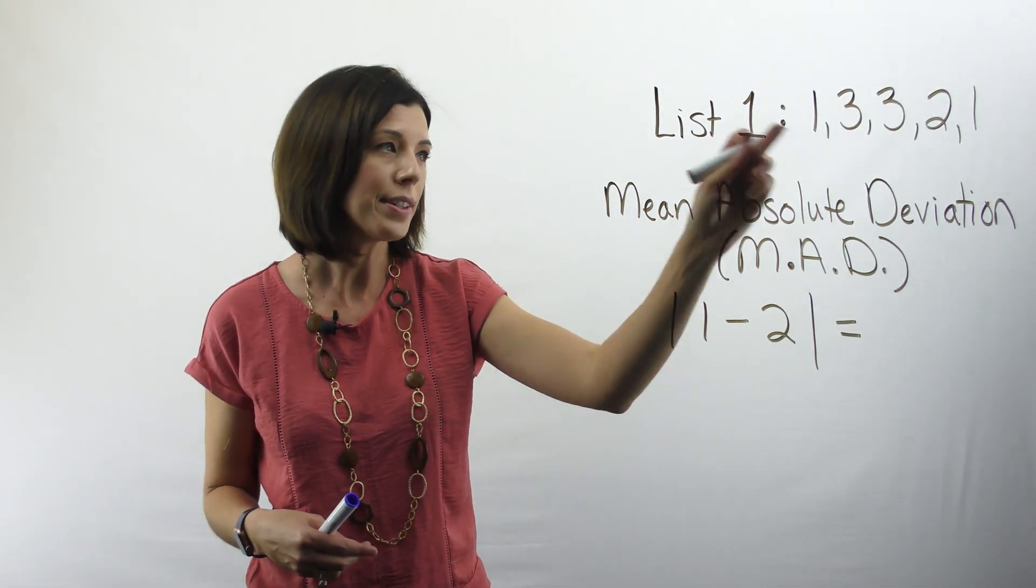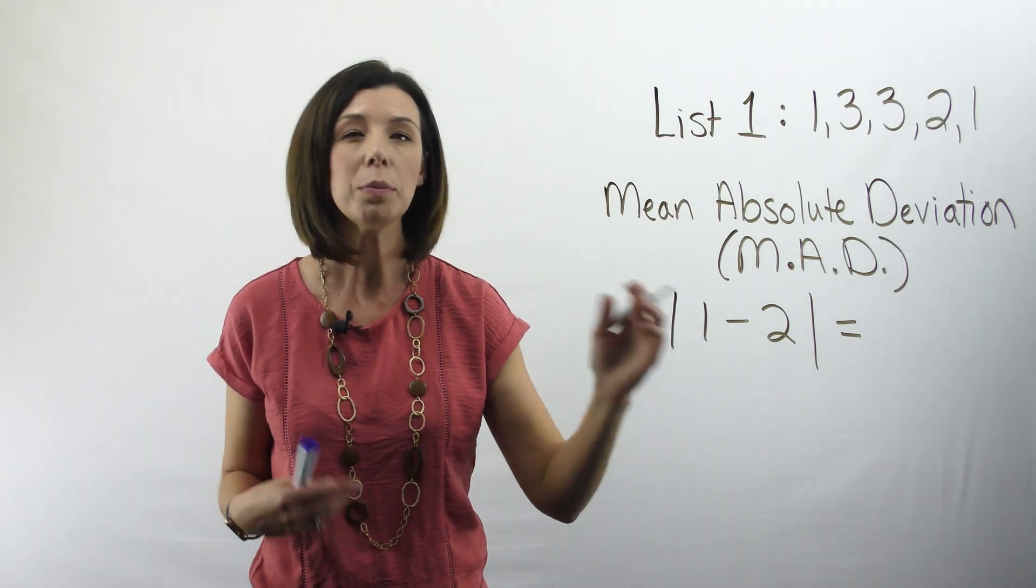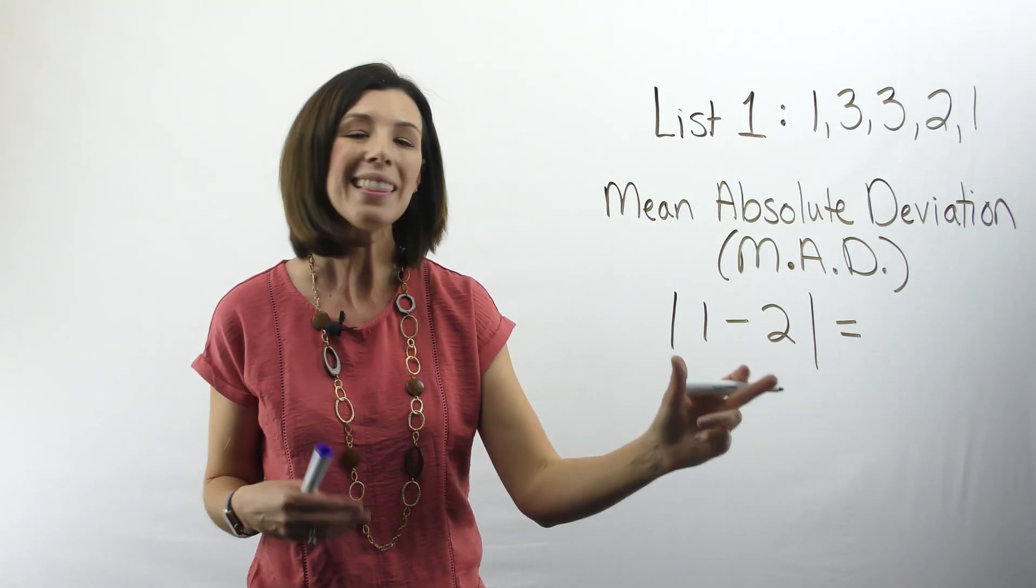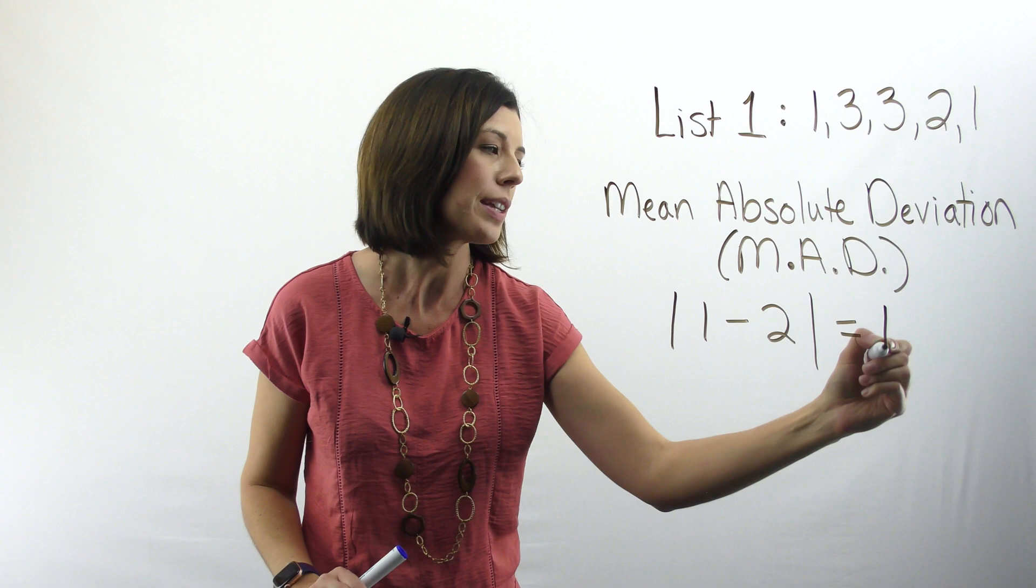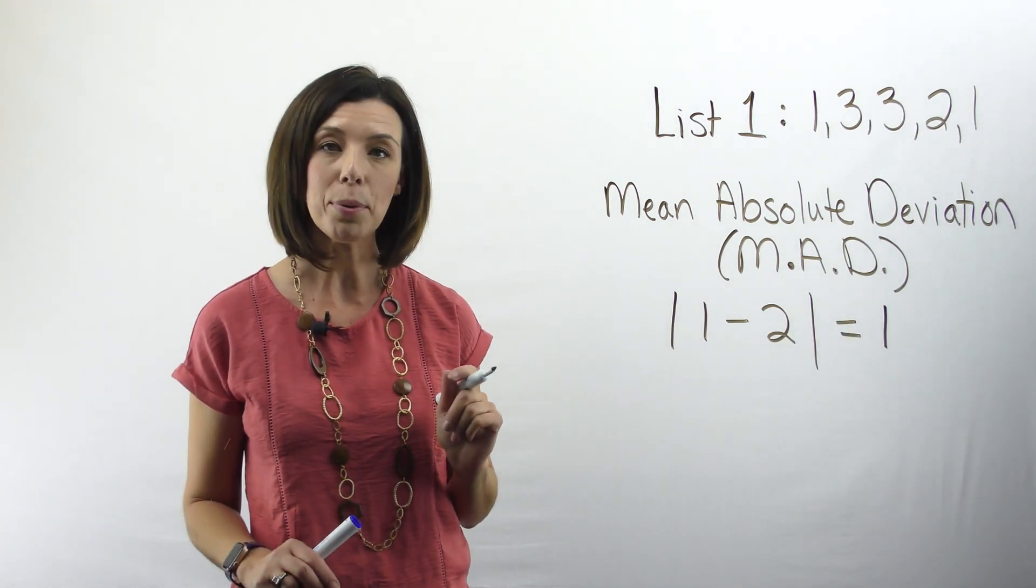Now remember, 1 is our first data point. 1 minus 2 would be negative 1, but I'm taking the absolute value, right? So I'm going to get 1. I'm going to repeat this for each of the data points.